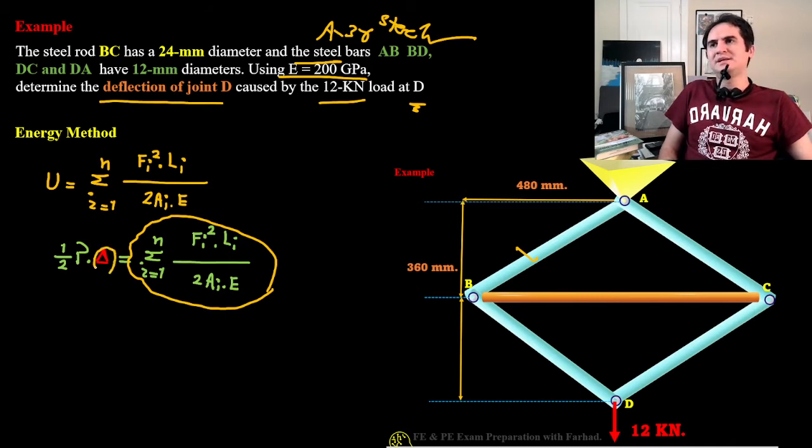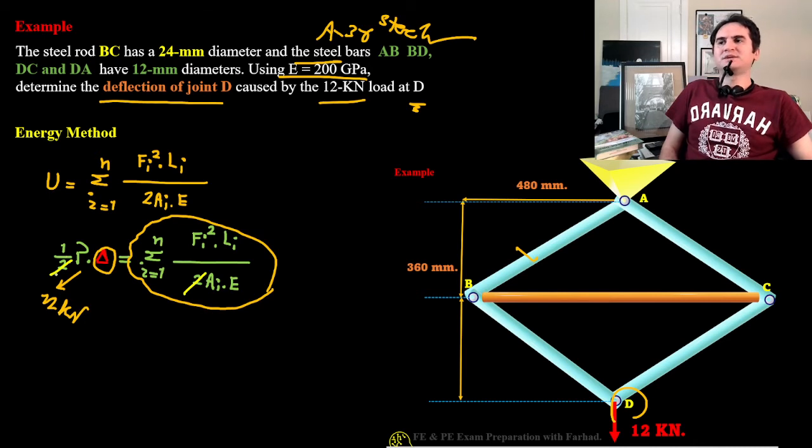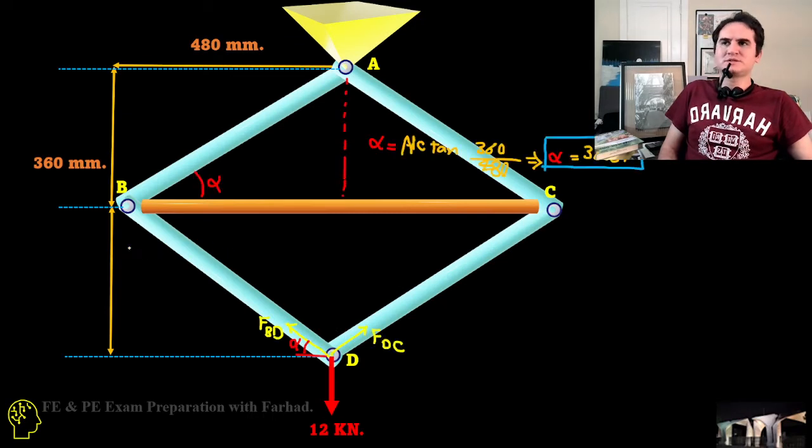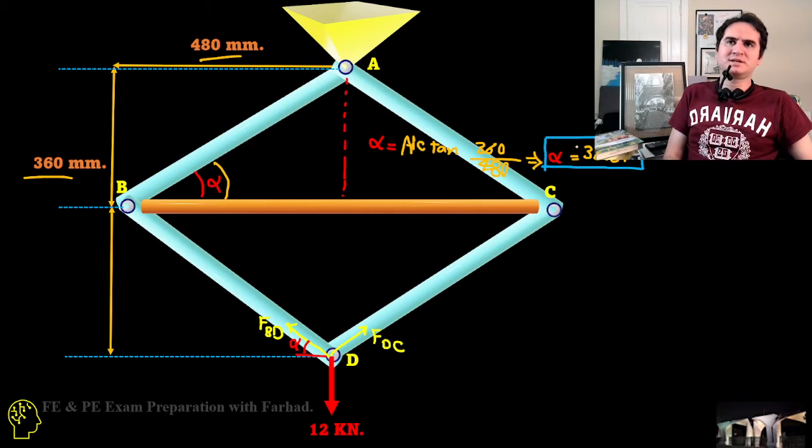We are looking after delta at the point P of 12 kilonewton. We can cancel out these two with any other part of the equation, and if we just call this angle alpha, alpha is the inverse tangent of rise over run, 360 over 480, and it just gives us an alpha equal to 36.87.